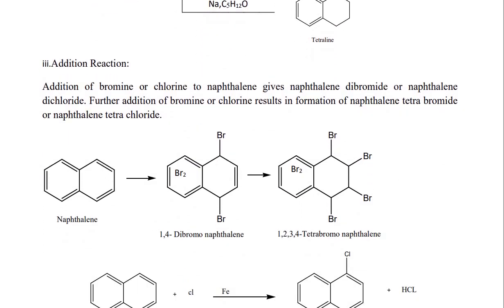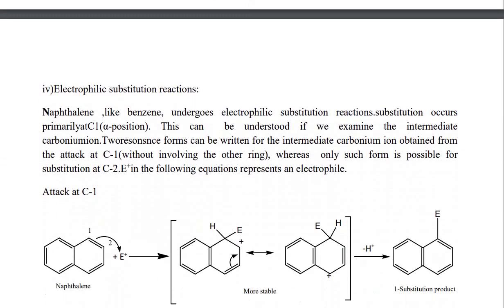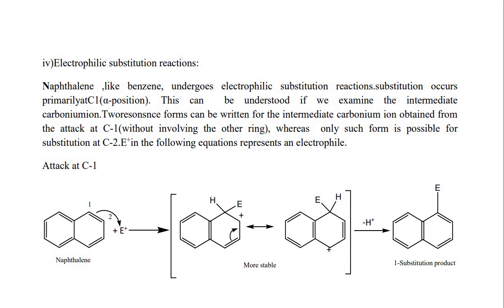Addition of bromine or chlorine to naphthalene gives naphthalene dibromide or naphthalene dichloride. Further addition of bromine or chlorine results in the formation of naphthalene tetrabromide and naphthalene tetrachloride. With Br2, 1,4-dibromonaphthalene forms, and after further addition, 1,2,3,4-tetrabromonaphthalene forms. Naphthalene also undergoes chlorination to give 1,4-chloronaphthalene.